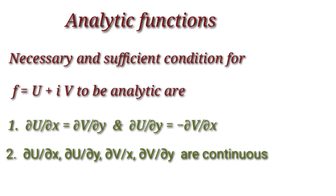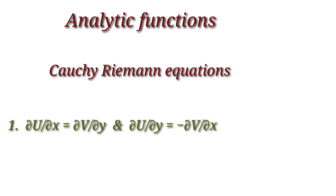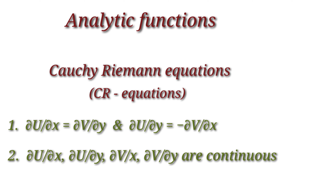The equations in condition one — ∂u/∂x = ∂v/∂y and ∂u/∂y = −∂v/∂x — are together called the Cauchy-Riemann equations, or simply CR equations. So if a function f satisfies the Cauchy-Riemann equations and also the four partial derivatives ∂u/∂x, ∂u/∂y, ∂v/∂x, ∂v/∂y are continuous, we can say f is analytic.